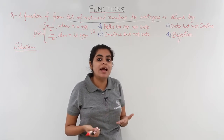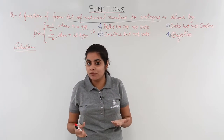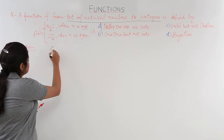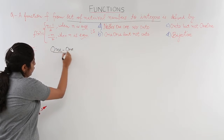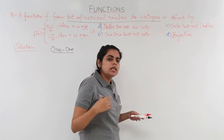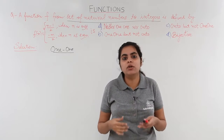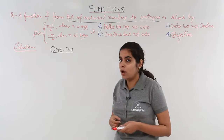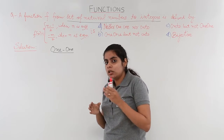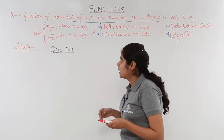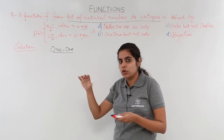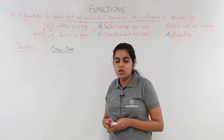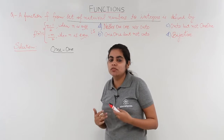We have to check it is one-one and onto both. If it is both one-one and onto, it is bijective; otherwise it is not bijective. In earlier problems, we could check whether a function is one-one by drawing the graph, using monotonicity, or using the definition. But here the function is split into two pieces, so we have to take both categories into consideration — that is the only difference; otherwise the question is not difficult at all.